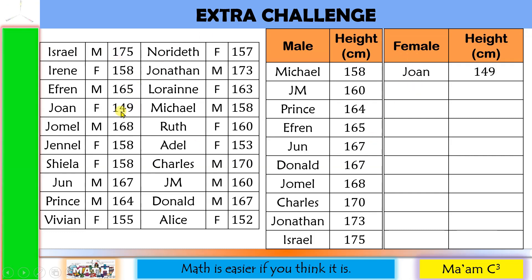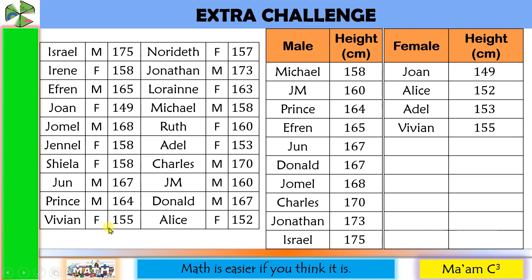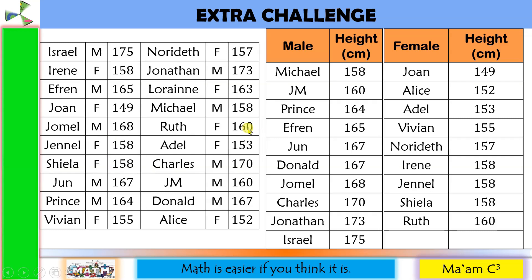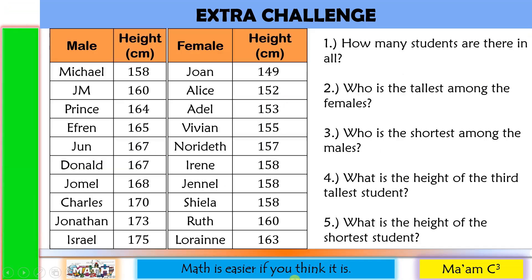For the females: Joanne at 149, Alice at 152, Adele at 153, Vivian at 155, Norideth at 157, Irene at 158, Janelle also at 158, Sheila also at 158, Ruth at 160, and Lorraine at 163.